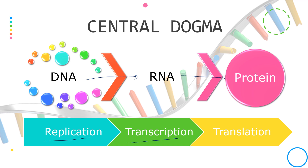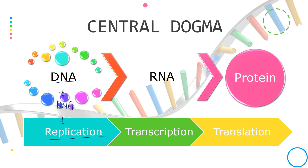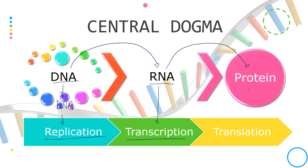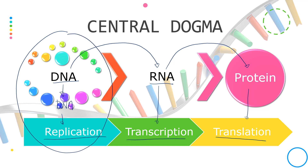The three processes are replication, transcription, and translation. When a DNA is used as a template to create more DNA, this process is called replication. When DNA is used as a template to synthesize RNA, we call this transcription. And when protein synthesis is directed by the RNA, we call this translation. In this video, we will be talking about DNA replication.